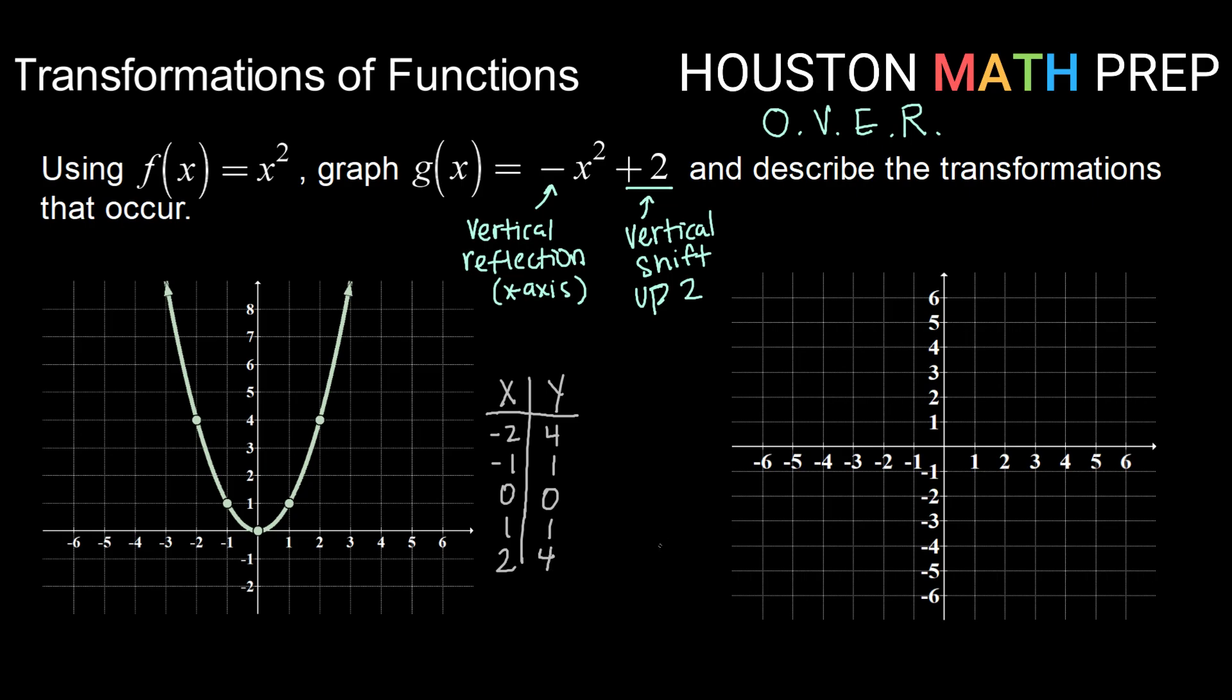Now when I reflect vertically, I can think about multiplying each of these y values by a negative, or I can kind of do it more visually. So if I think about the point negative 2, 4, or I can do that on my new graph over here, negative 2, 4, a reflection over the x-axis says if I'm 4 up, instead of being 4 up, I'm going to be 4 down. So I would have a point here at negative 2, negative 4 now.